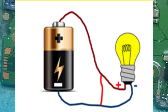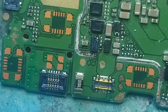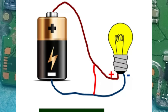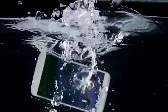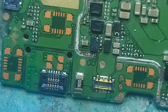A short circuit is a low resistance connection between the two conductors supplying electrical power to any circuit. Here is an example of a short circuit — you can see there is a connection between the positive and negative wires. A short circuit can be caused by different things such as water damage, dropping the phone, and so on.